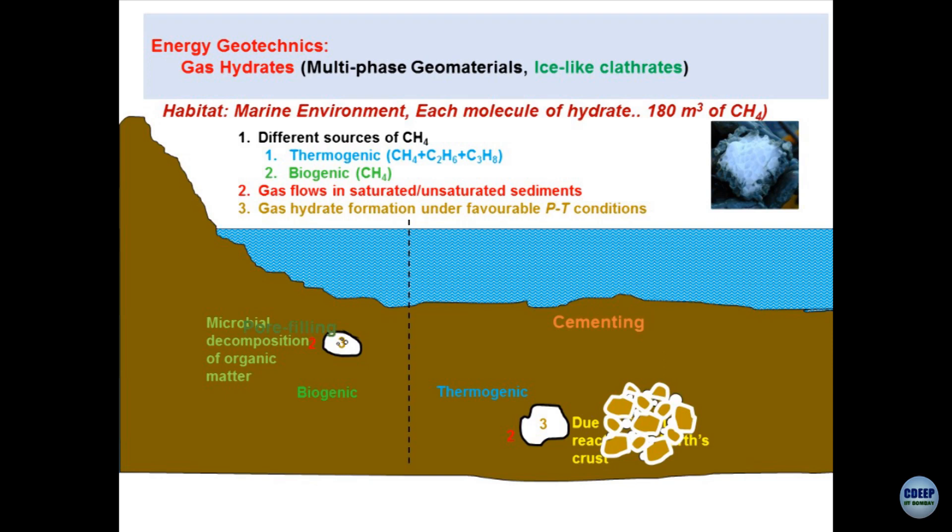What I have shown here is a typical continental margin. This side is onshore and as we go in the deeper environment this becomes offshore. This is how gas hydrates look like - just like dry ice, a dirty ice. The moment you bring them to natural environment they dissociate and methane goes out.